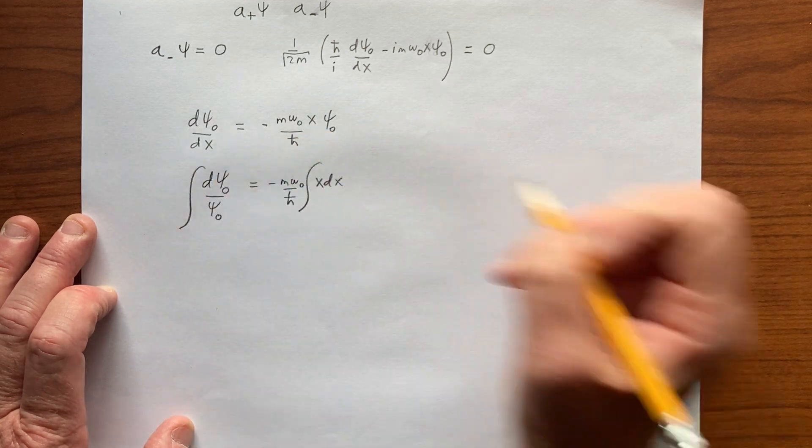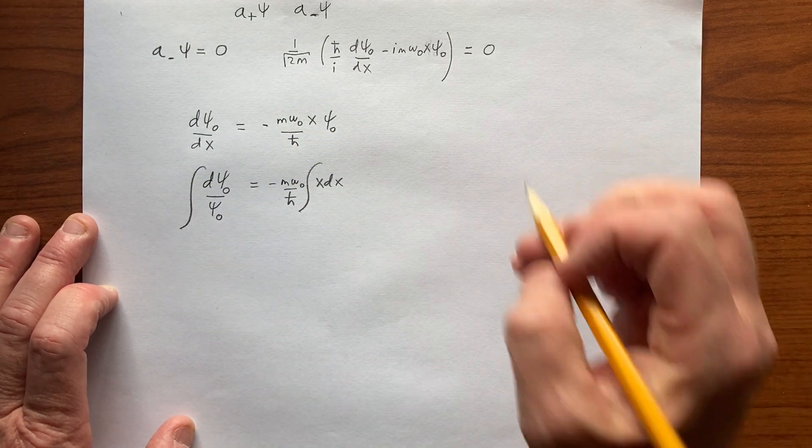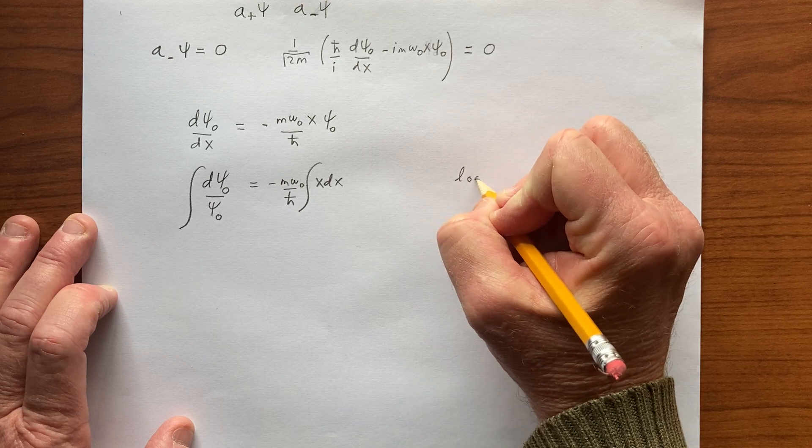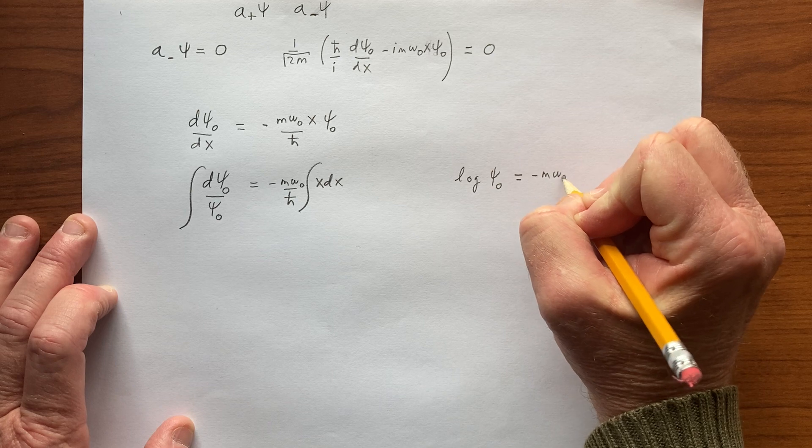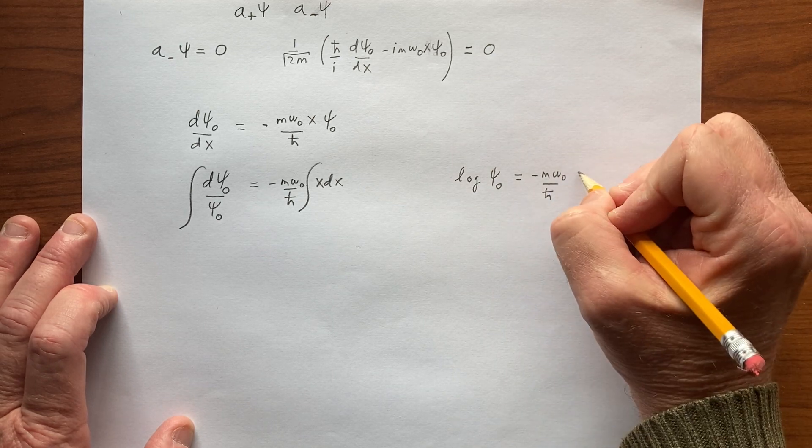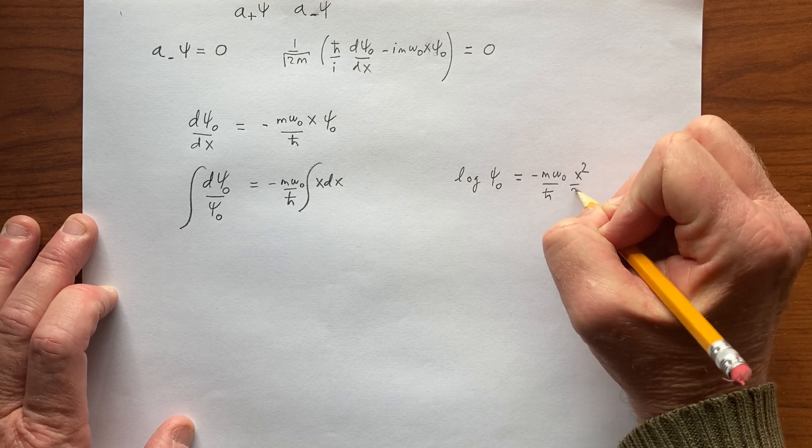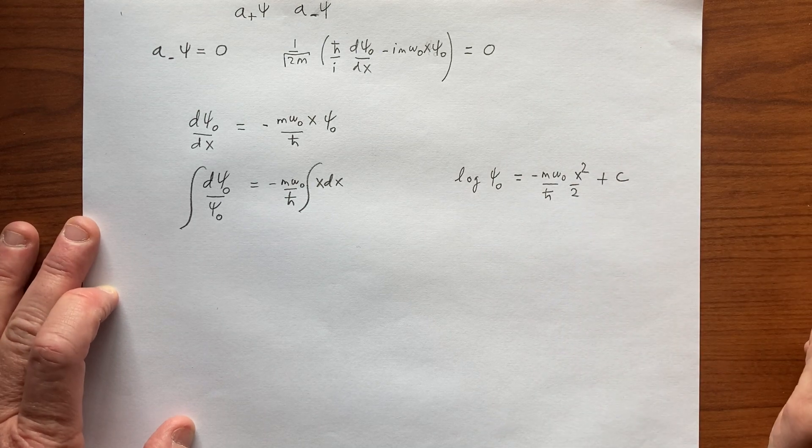And this gives us the natural log of ψ₀, that's equal to minus m ω₀ over ℏ, x² over 2, plus some constant of integration.